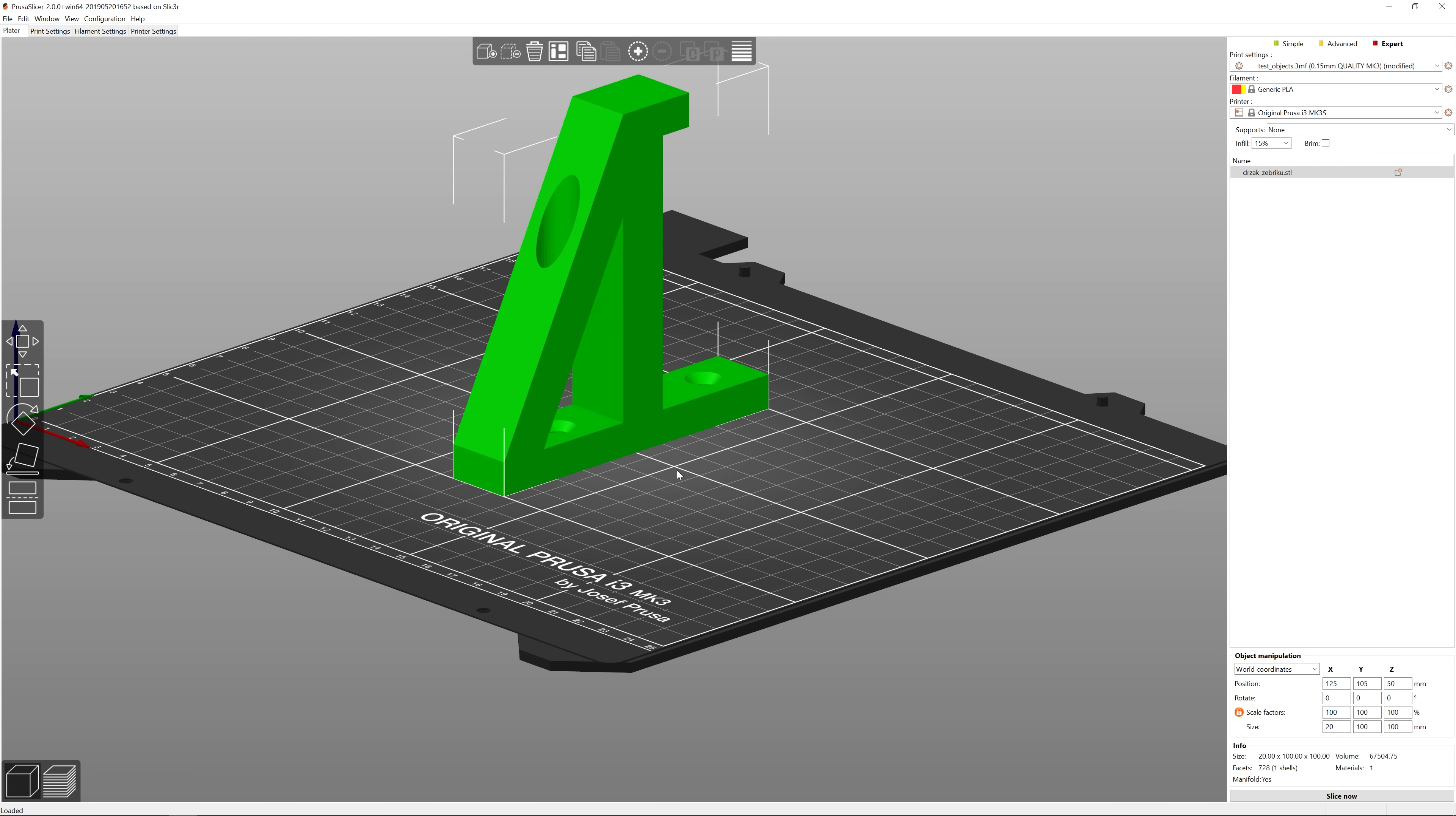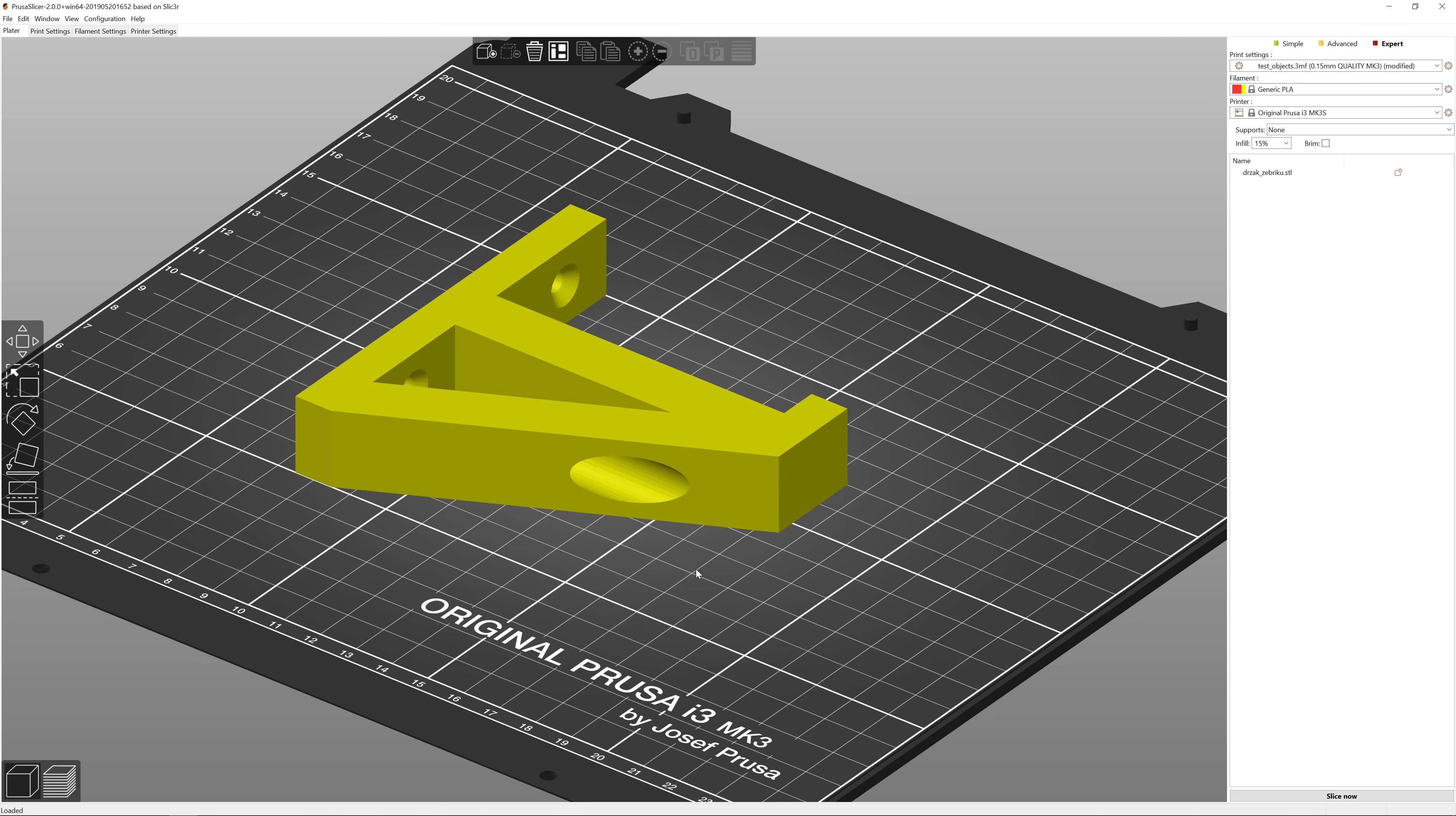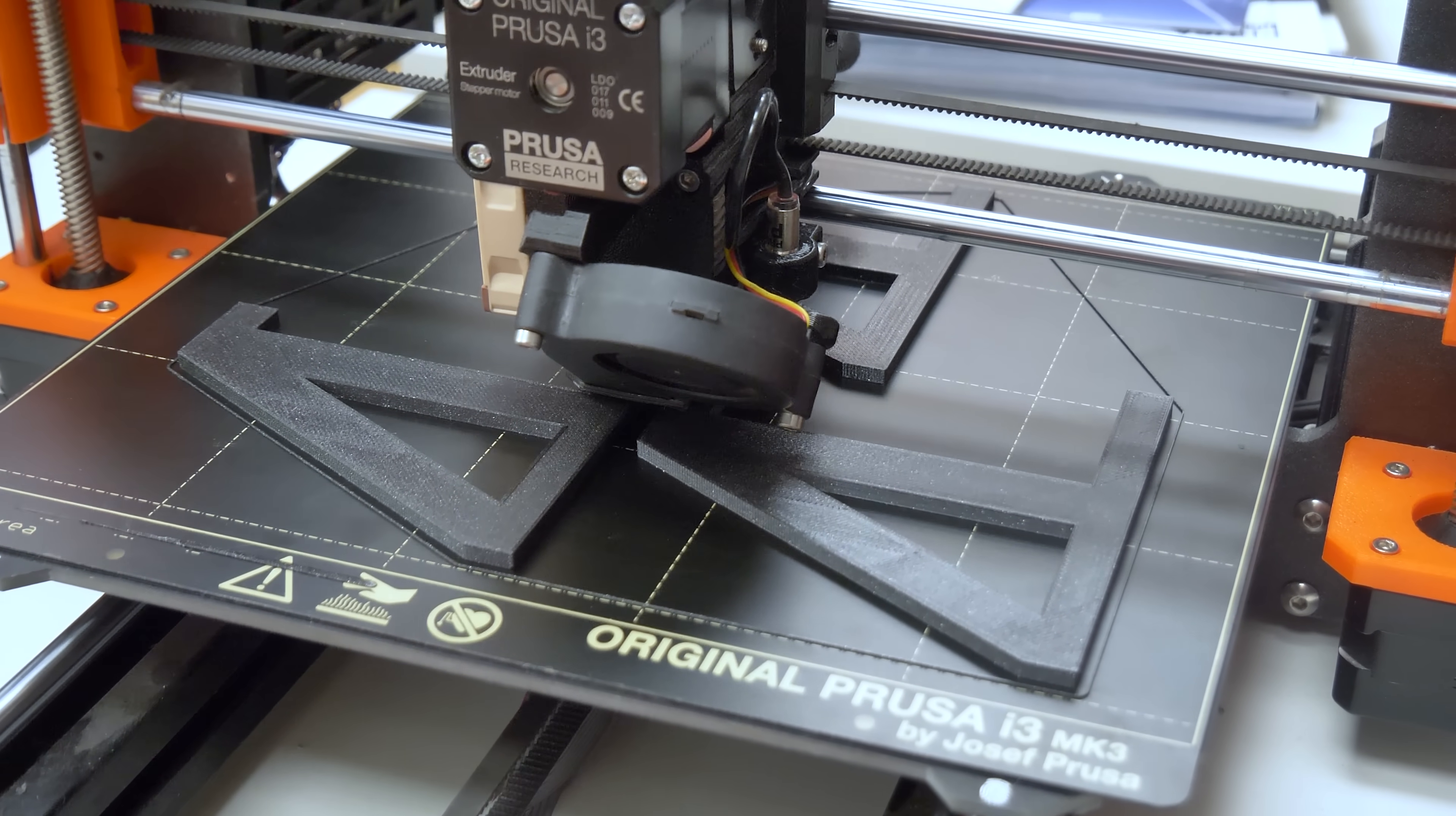So, this concludes our testing. Now, let's take a look at how to anneal 3D printed objects. Before we start, it's important to mention that this is not suitable for highly detailed models due to warping at higher temperatures. Simple models work better, such as this leather holder.